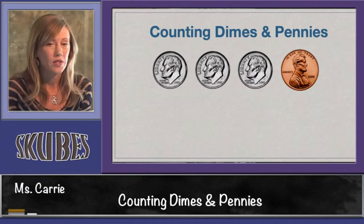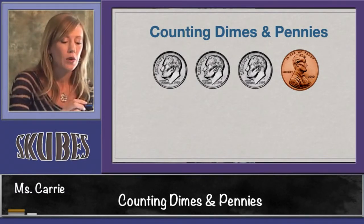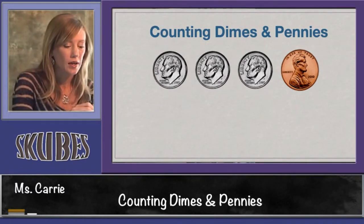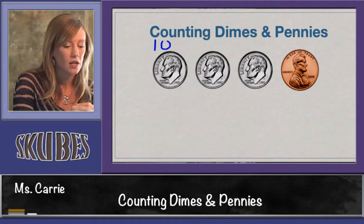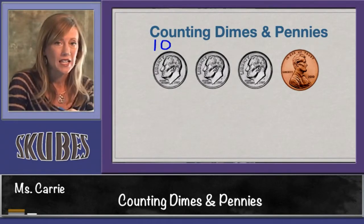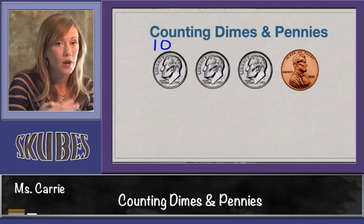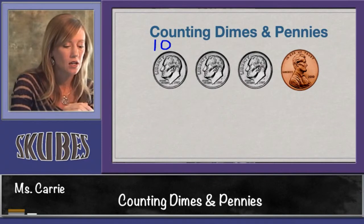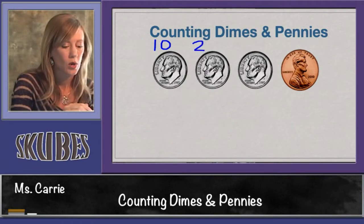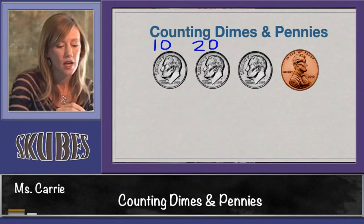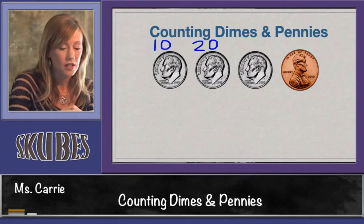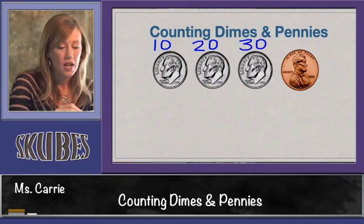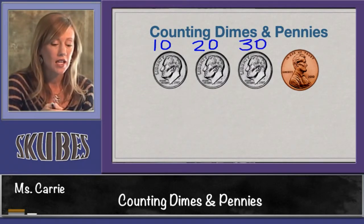We'll start with the first dime — we know that's ten. When we get to the second dime, we just count up ten, so ten, twenty. Another dime makes thirty.